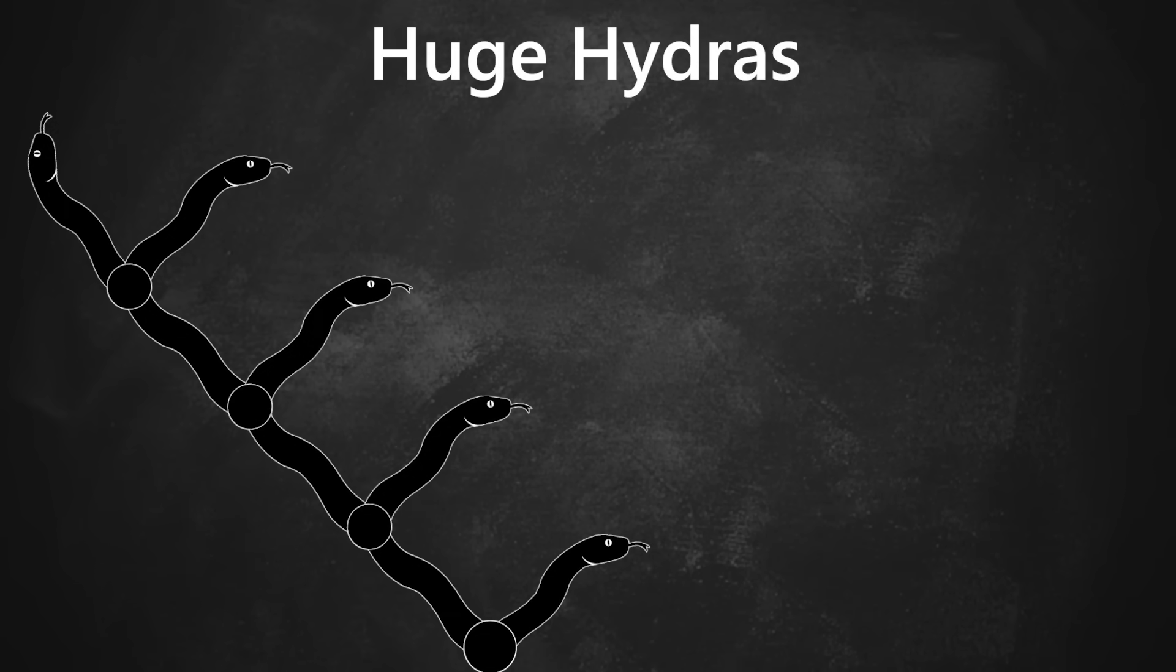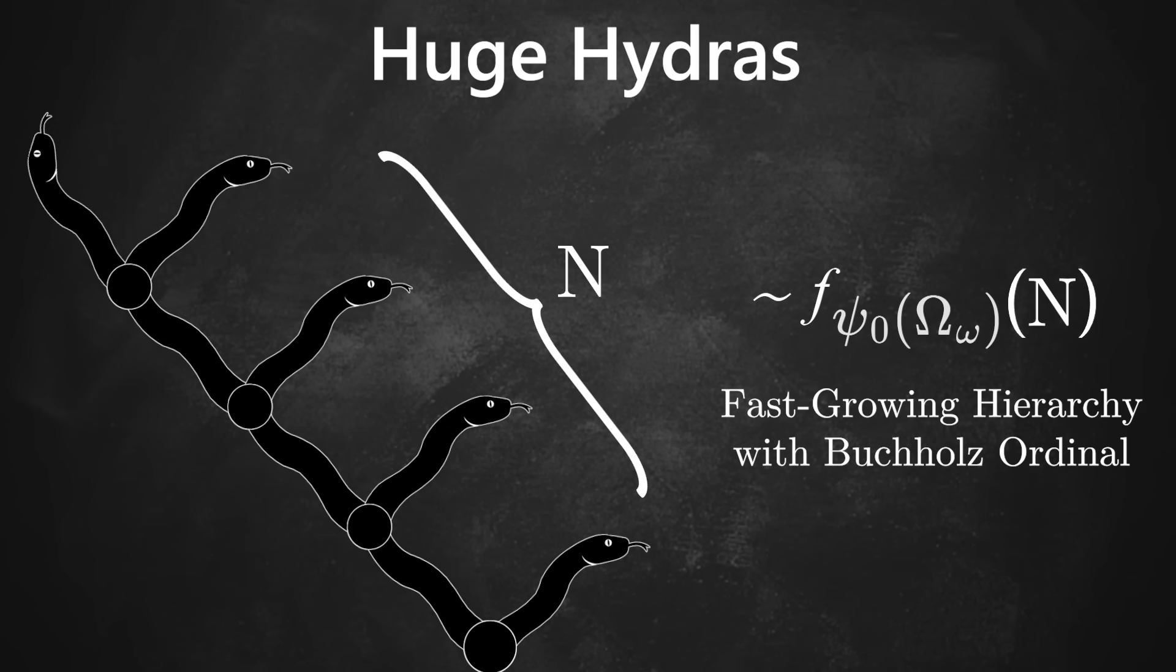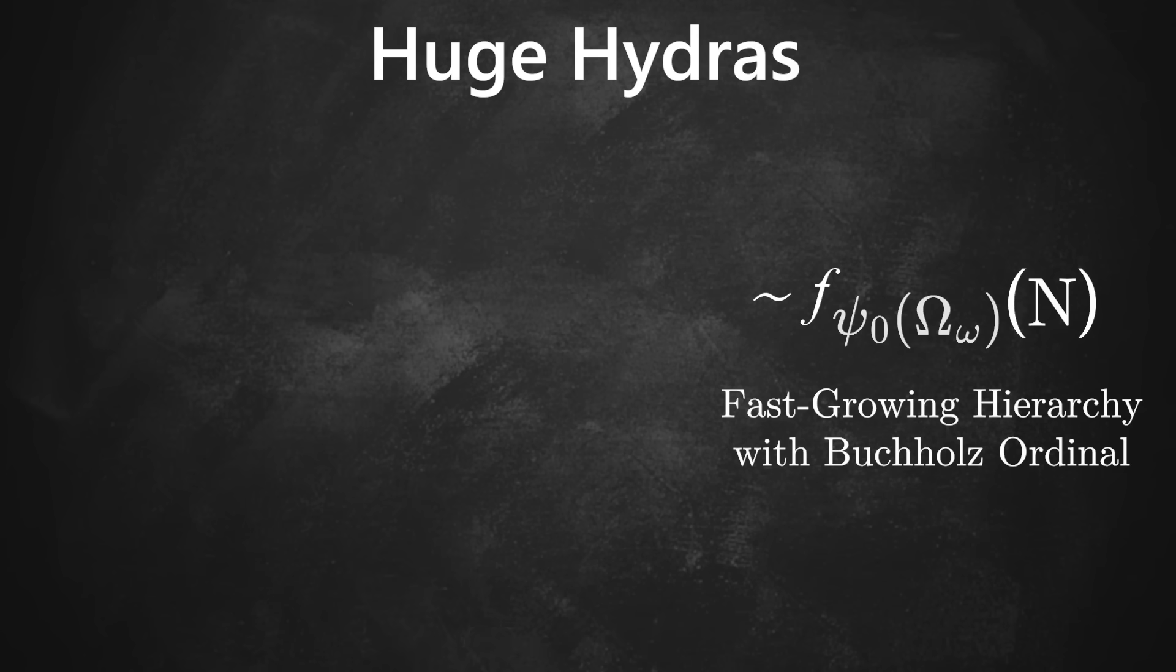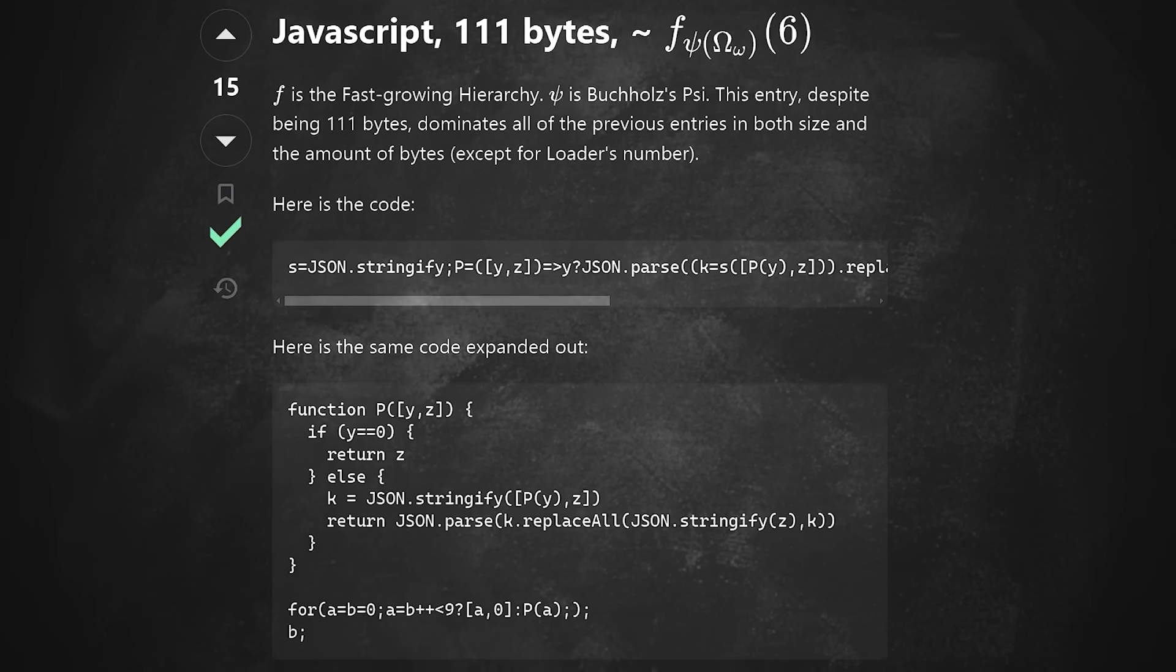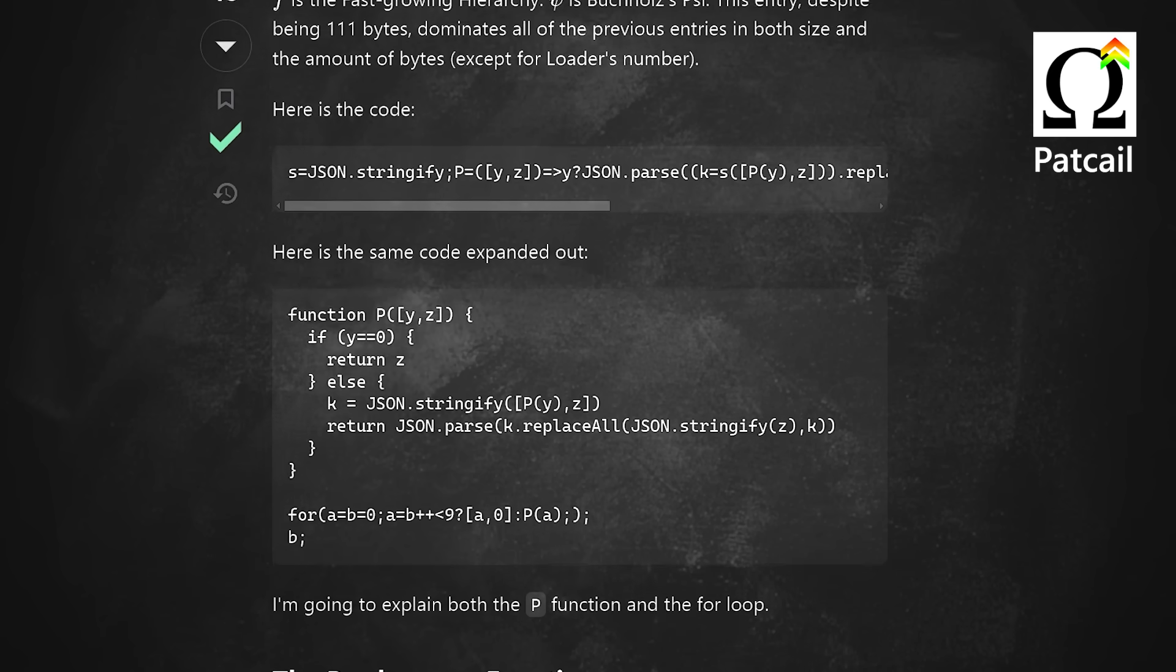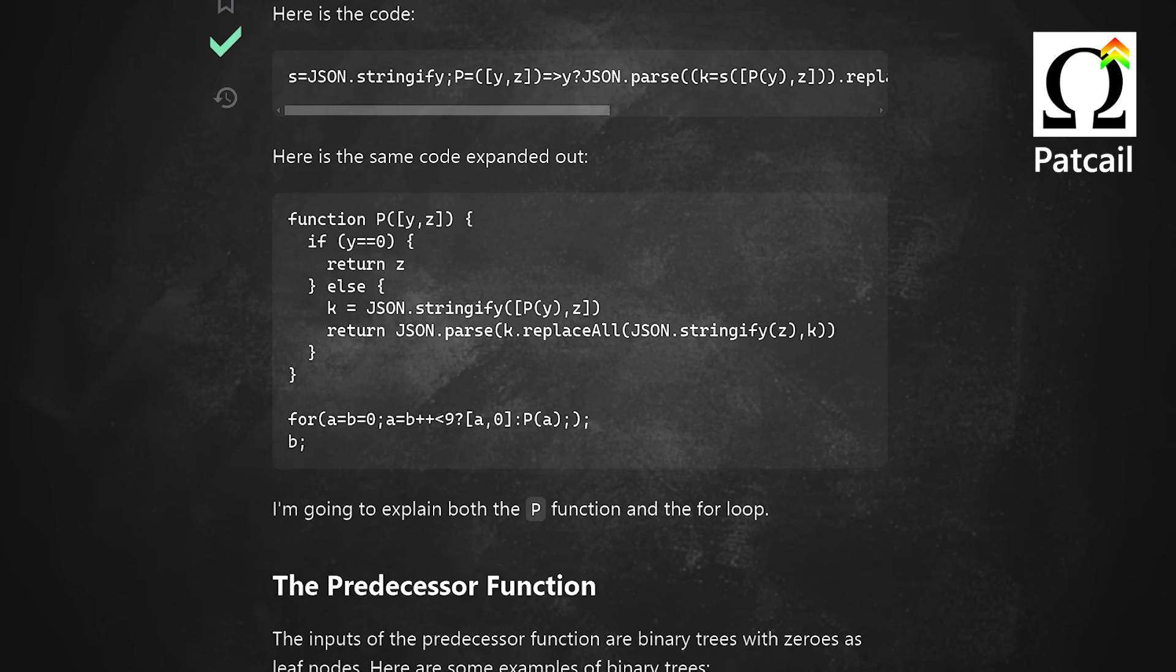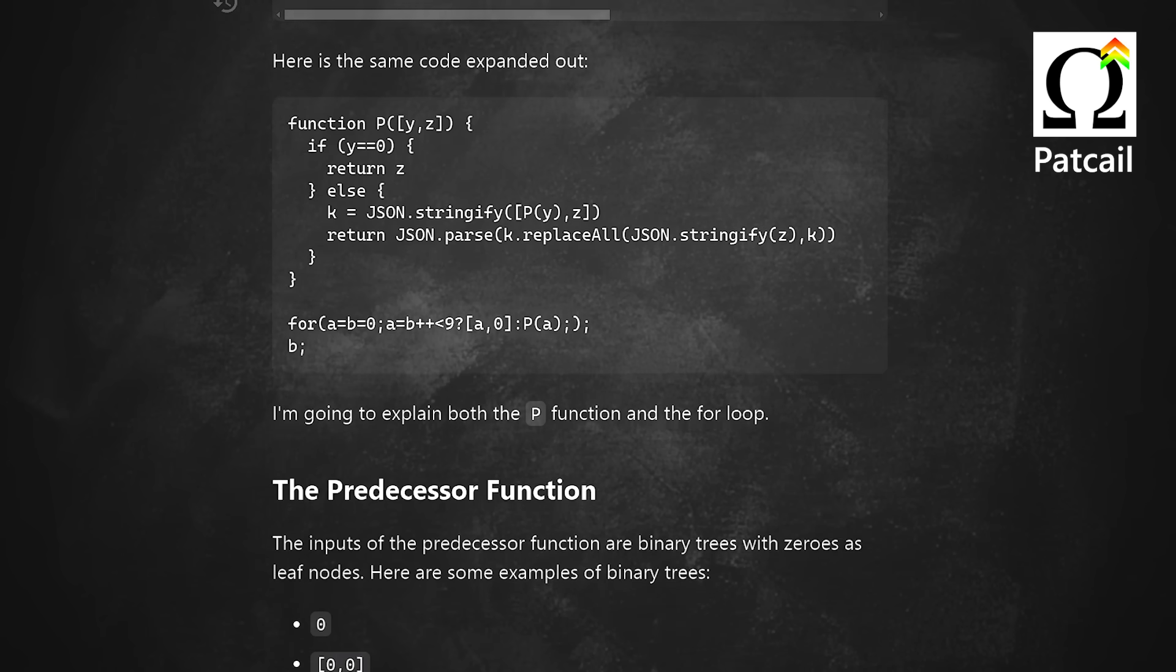And making a hydra of this form that's n heads tall grows at the rate of the Buchholz ordinal function, which is a lot faster than the tree function. There's a Stack Overflow post by Pat Kale that goes over the proofs in a lot more detail, so I'll link that below because it's a really fun read.